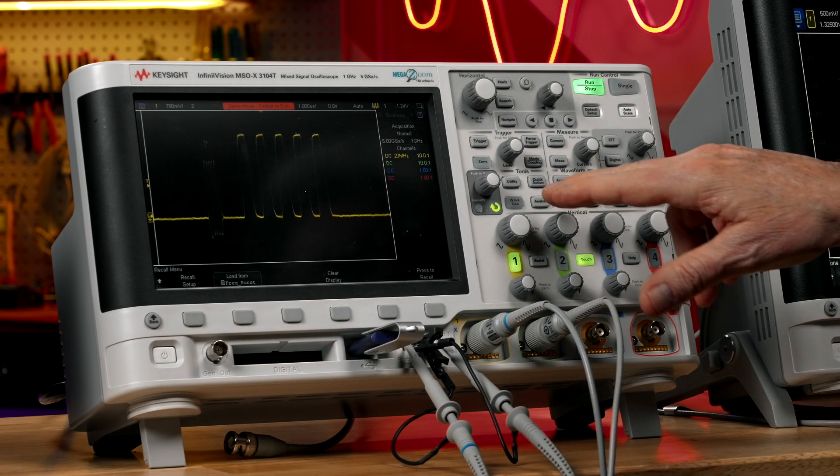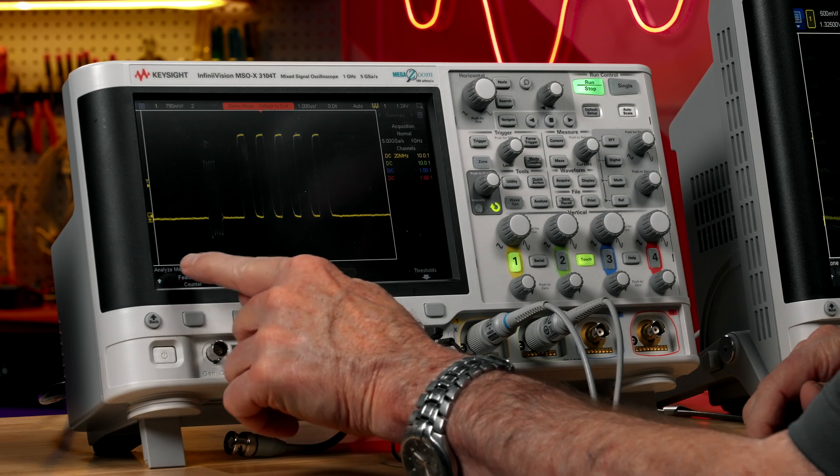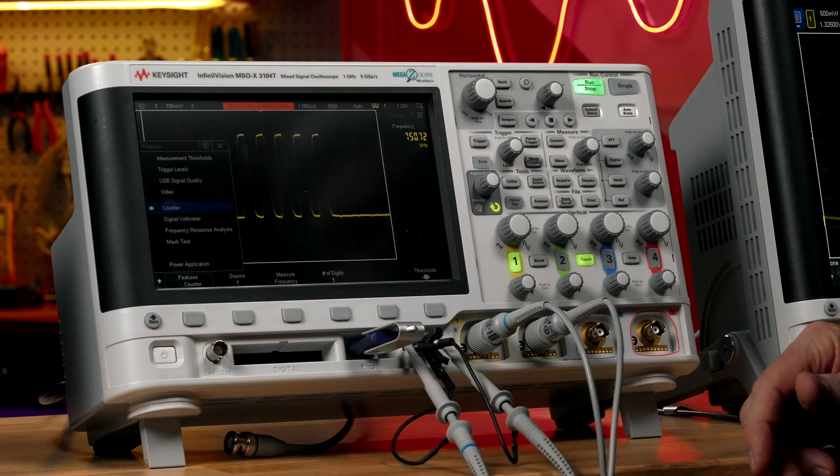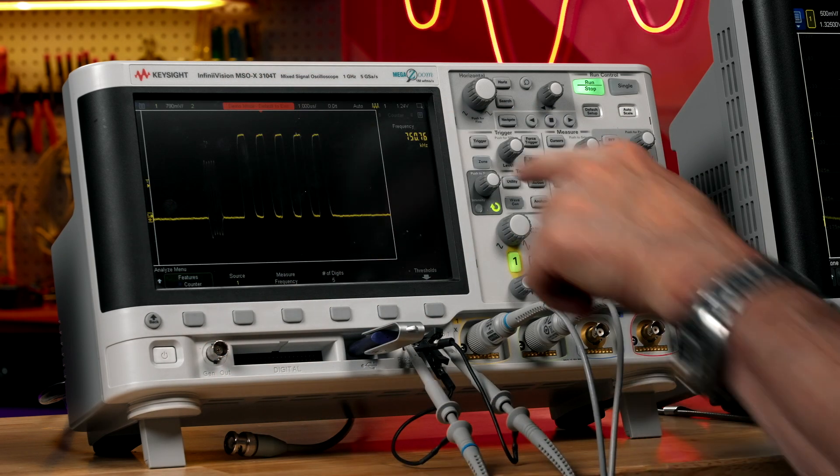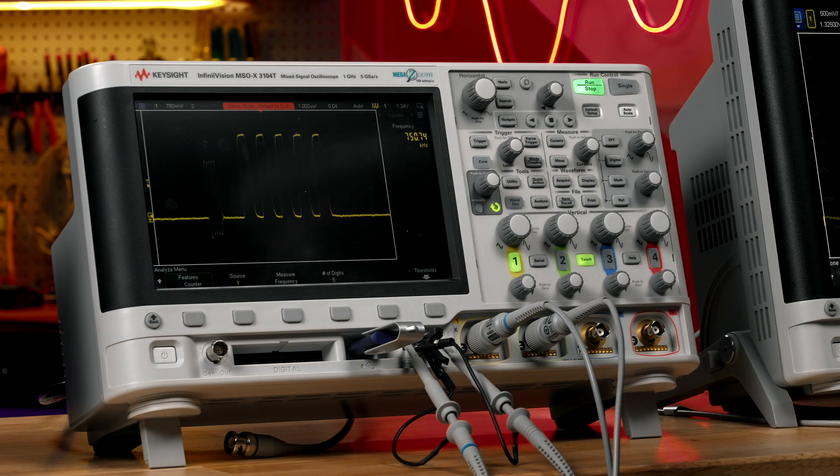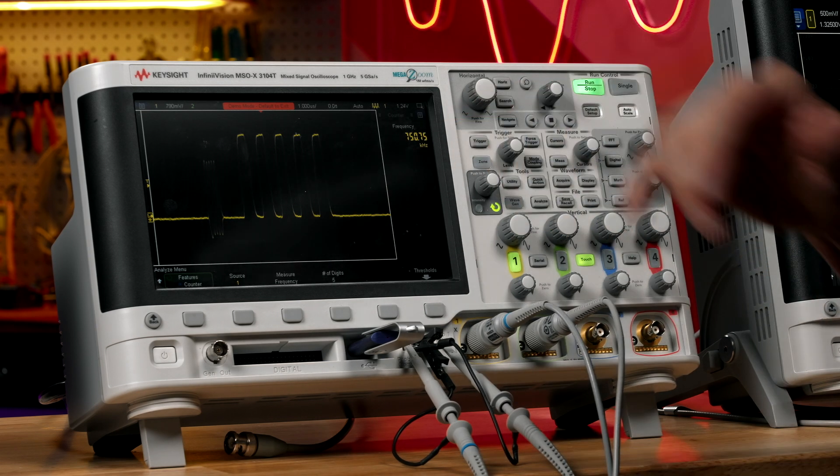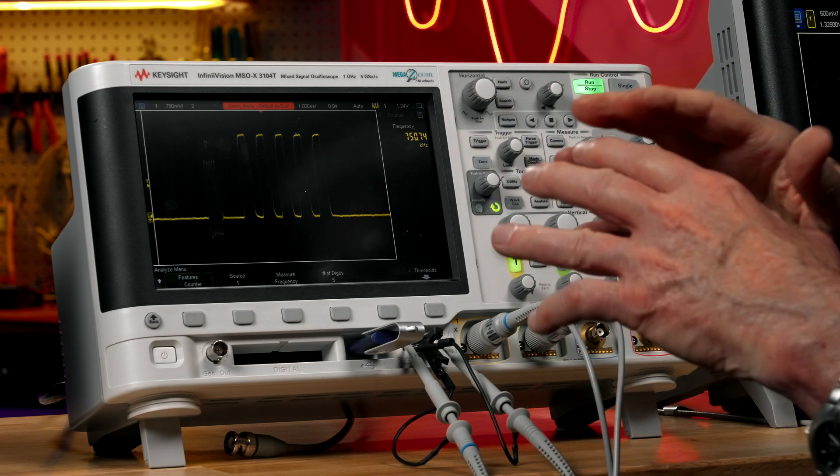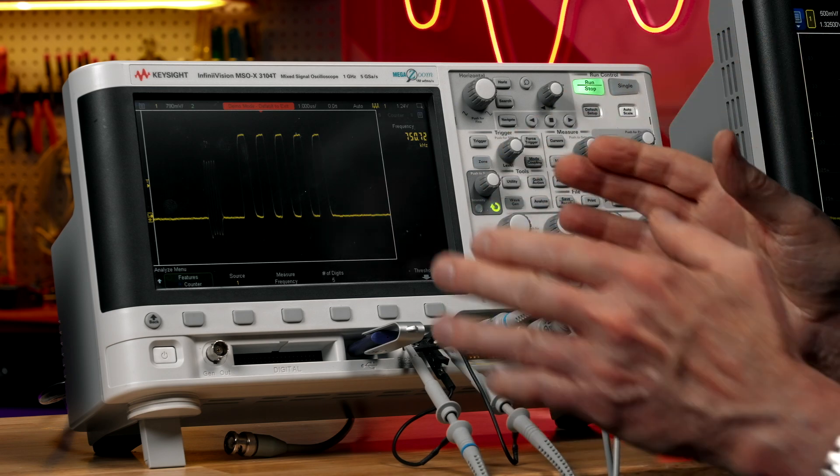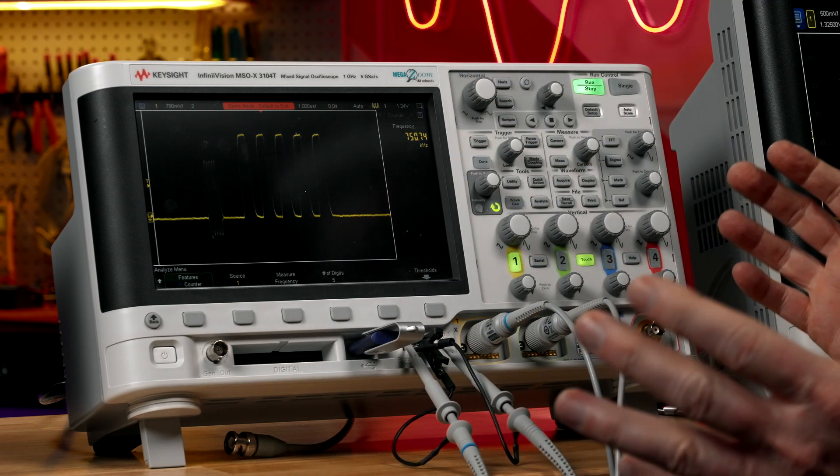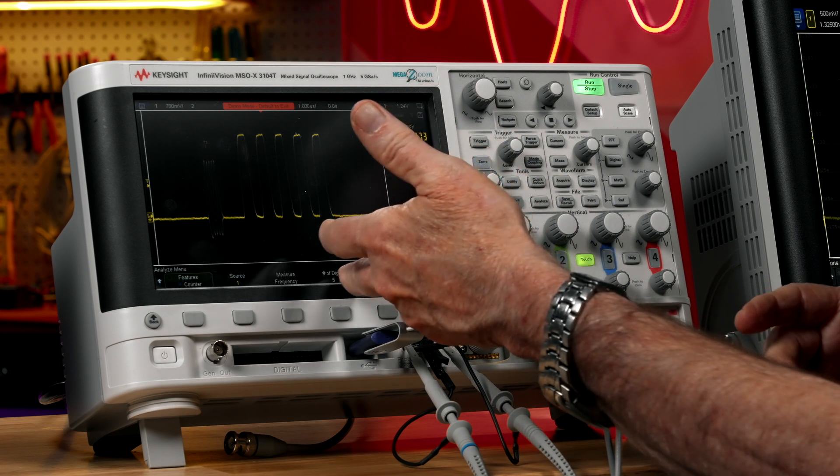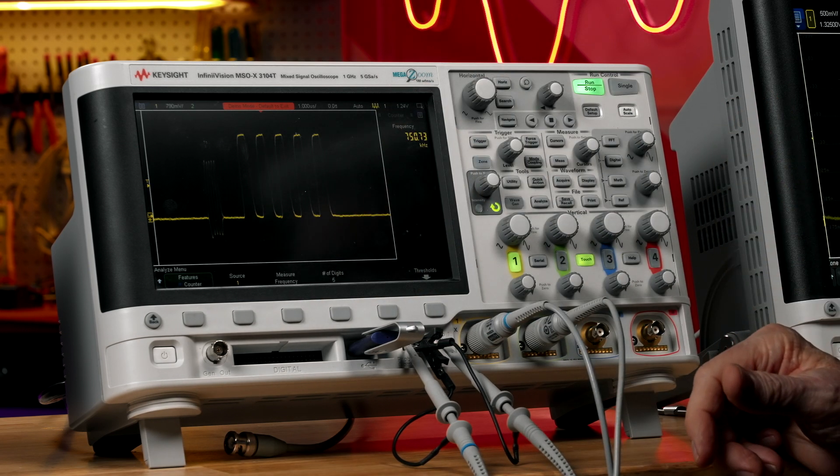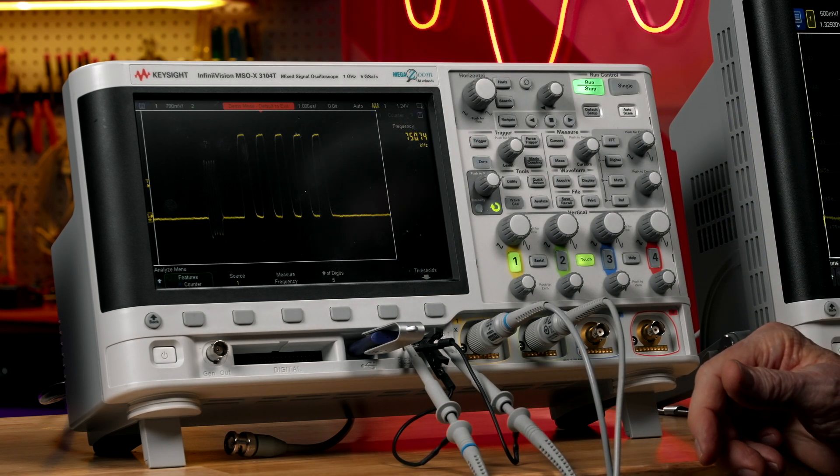If I turn on the hardware counter, let's do that. It measures 750 kilohertz and some digits flipping. It's just measuring the average frequency of this signal, including all the dead time at this point over a hundred millisecond window. So this is totally inaccurate.